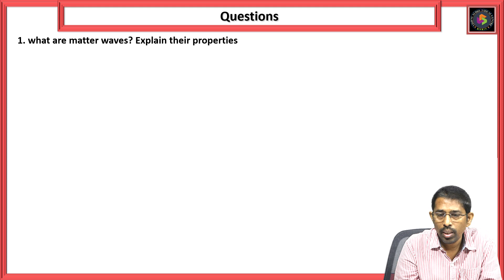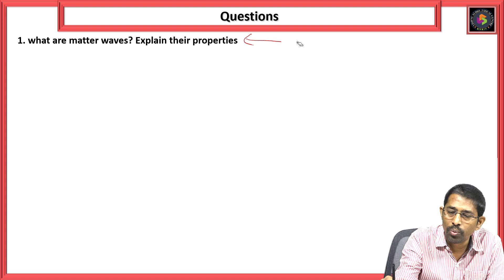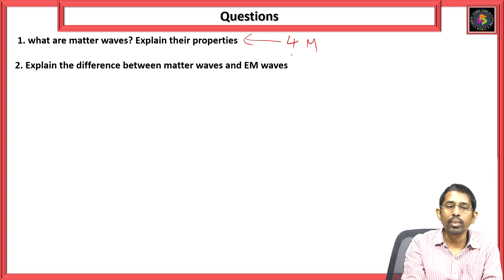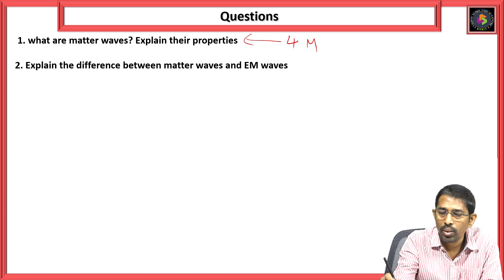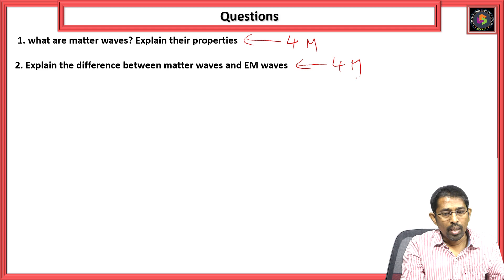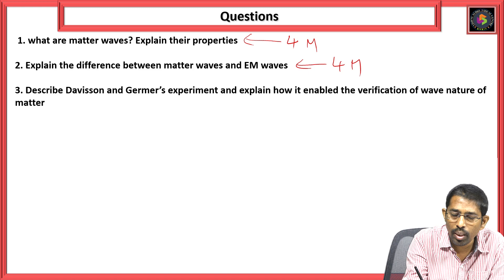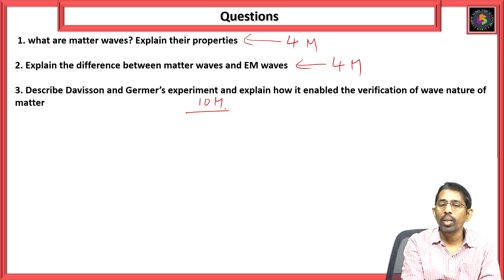Expected exam questions: First, what are matter waves — explain their properties (4 marks). Second, explain the difference between matter waves and EM waves (4 marks). Third, describe the Davisson and Germer experiment and explain how it enables verification of the wave nature of matter — generally given for 10 marks.